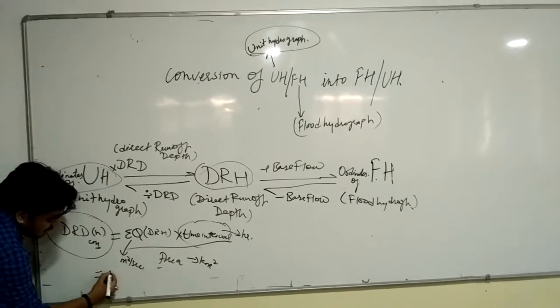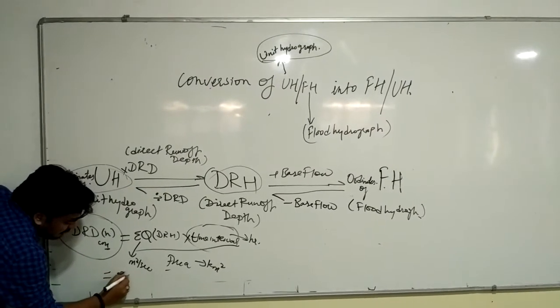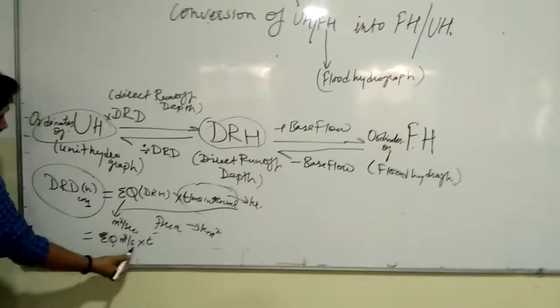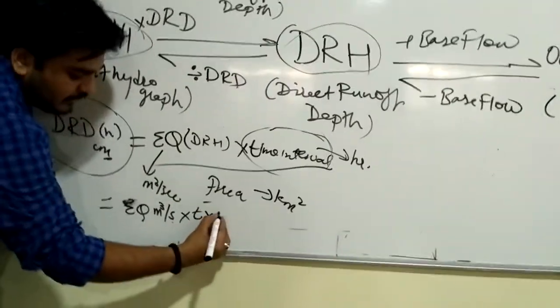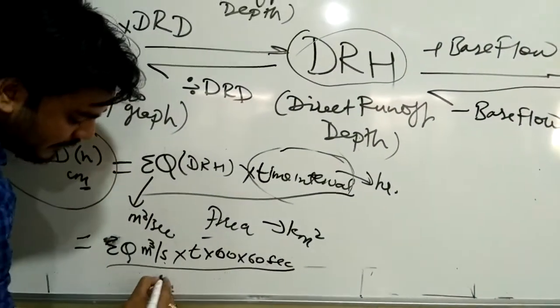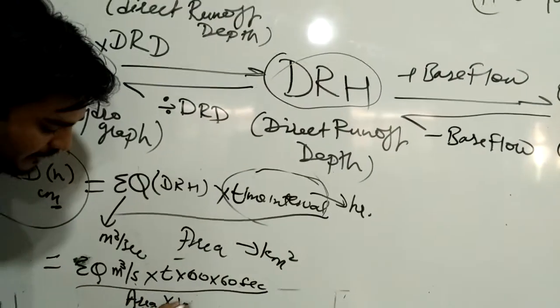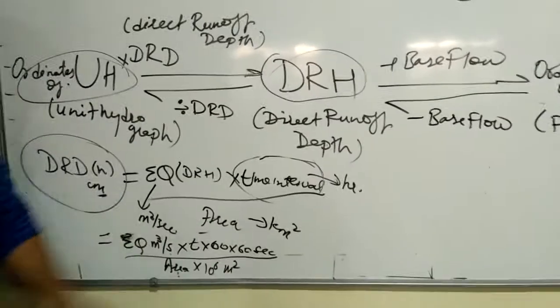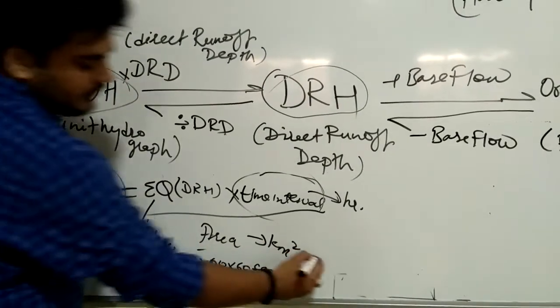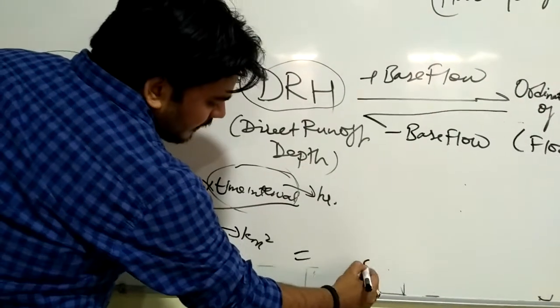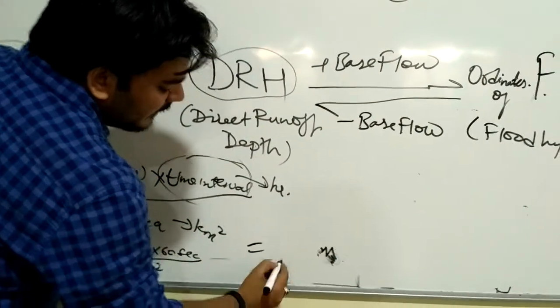So DRD can be calculated as summation Q in cubic meters per second, multiplied by T. First, we have to change the unit of T from hours into seconds — that means T multiplied by 60 minutes multiplied by 60 seconds — divided by the area multiplied by 10 to the power 6 square meters. Since 1 square meter equals 10 to the power minus 6 square kilometers, the units now become consistent, giving the depth in meters.